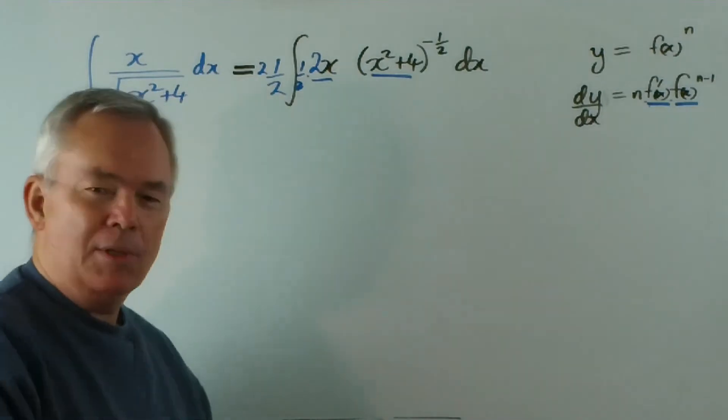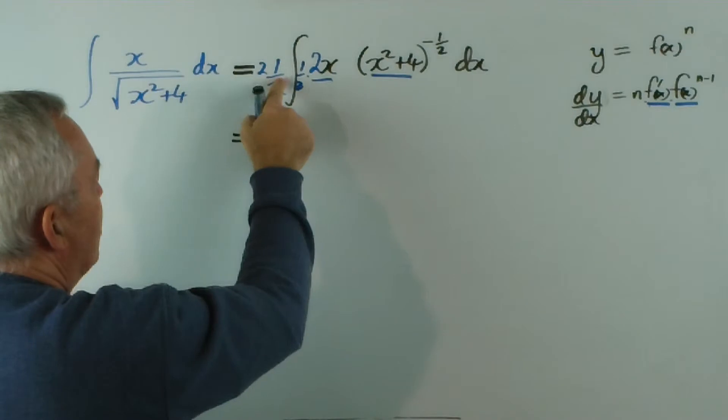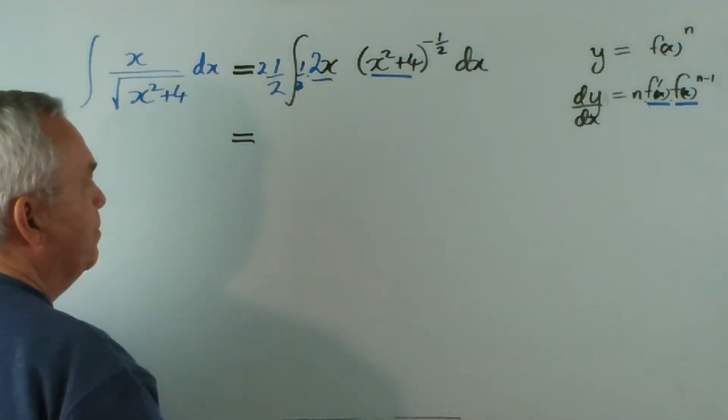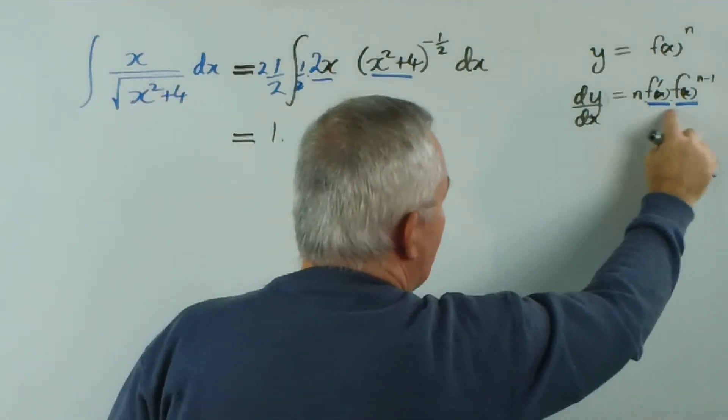Now this seems like a little bit of overkill, but have a close look. Two times a half is 1, I'll put the 1 here, and this integral now follows exactly this pattern.